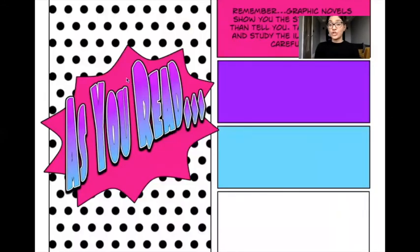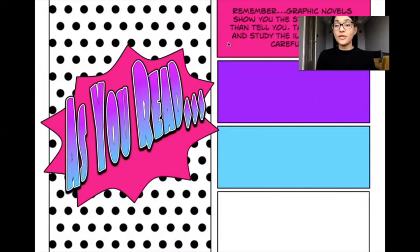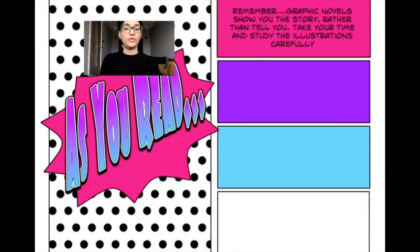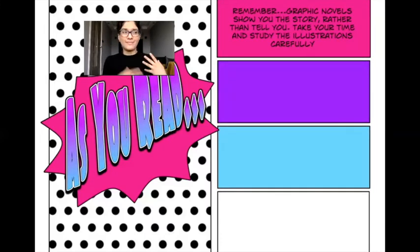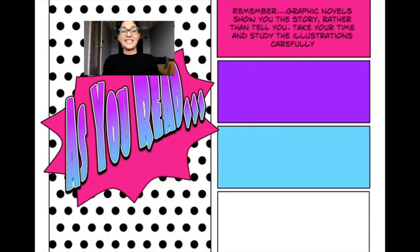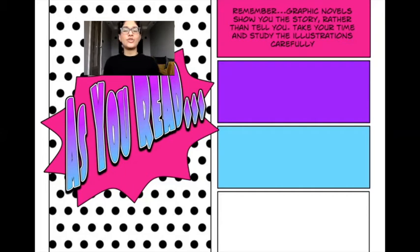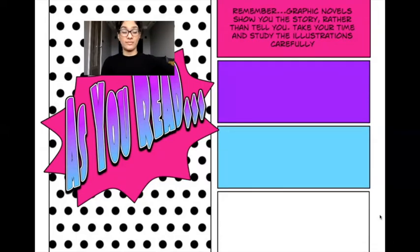Remember, as you read, that graphic novels show you the story rather than tell you. So take your time and study the illustrations carefully. In a traditional book, the story is told quite clearly, whereas in a graphic novel you have to understand it more independently — it doesn't give you too much detail about the storyline. When you are reading a graphic novel, make sure to really look at the pictures, because they will tell you the story more than the words.